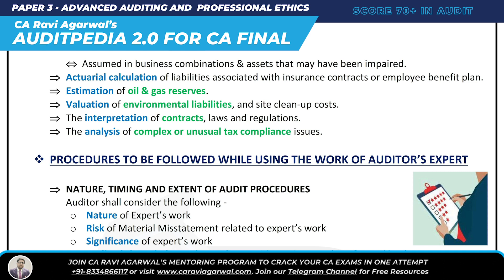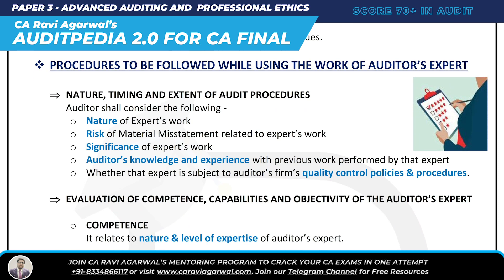The main question in ISA 620 is: what procedures must be followed when using the work of an auditor's expert? The first procedure is to understand the nature, timing, and extent of audit procedures. This involves considering the nature of the expert's work, the risk of material misstatement related to that work, the significance of the expert's work, and the auditor's knowledge and experience with previous work performed by that expert.